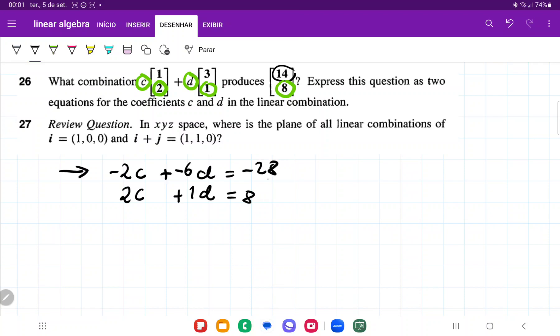The reason we did that is so now we can add these and the c can disappear. So 0c minus 6d plus 1d is minus 5d, which equals negative 28 plus 8, which is negative 20.